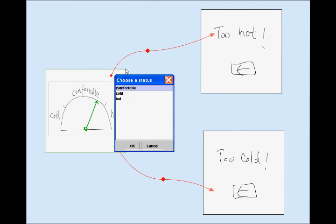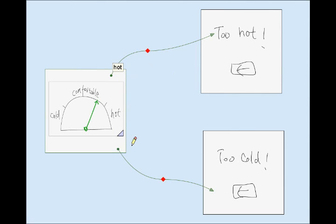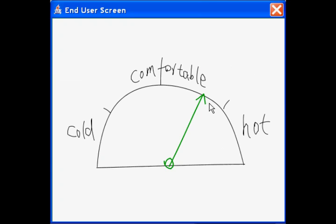Then the designer associates the two states of the dial, hot and cold, with the two links respectively. Now the designer tests out this design.